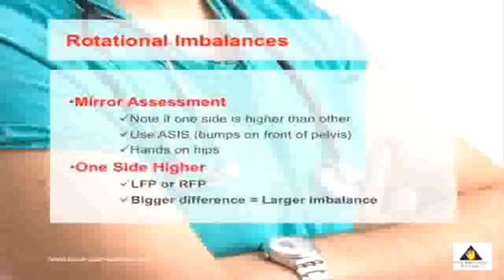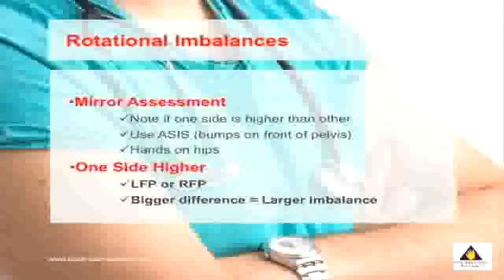If your left side is higher, you have what's called an LFP, and if you have the right side higher, you have an RFP. The bigger the height change, the bigger the imbalance occurring in your spine.